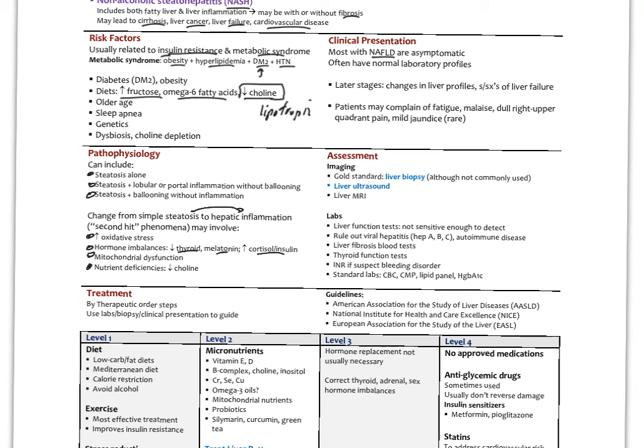The gold standard is liver biopsy. Although we typically don't just do it routinely. Typically we order a liver ultrasound and maybe a liver MRI, but usually ultrasound can detect fatty changes. If we suspect cirrhosis, then we're going to go deeper and of course do biopsies. Our labs, liver function tests, are usually not sensitive enough to detect it. So they're usually normal. We do rule out viral hepatitis and autoimmune disease in these patients. We might do the liver fibrosis blood tests in later stages, thyroid function tests, coagulation tests, and then our standard labs to look for blood sugar, insulin resistance, all that.